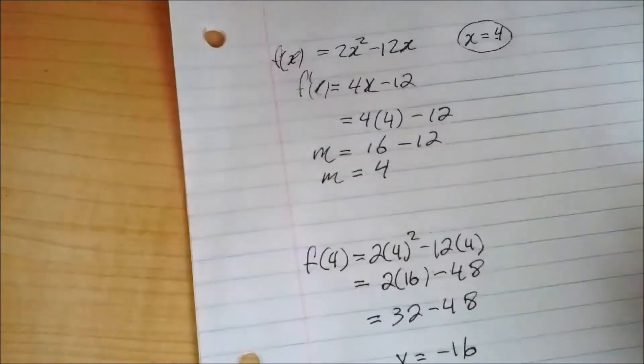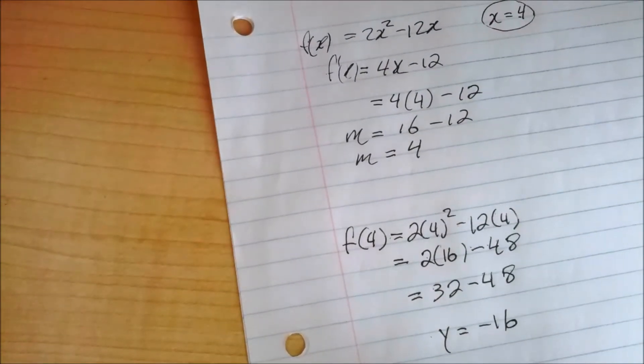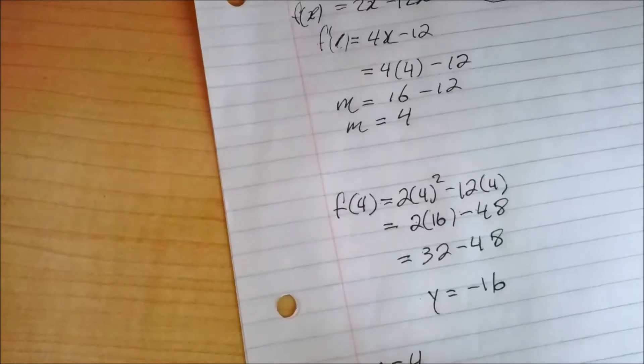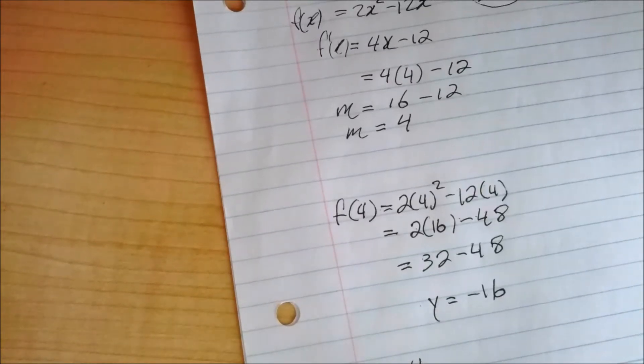So we have our two values now. We have our m equals 4, which is the slope, and y equals negative 16. And our x, of course, is 4 because that was given earlier.